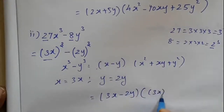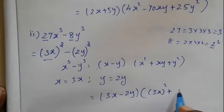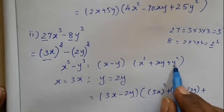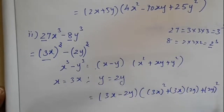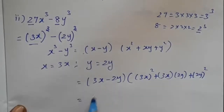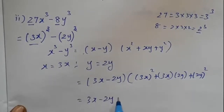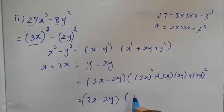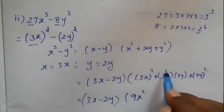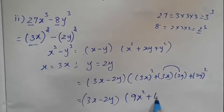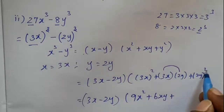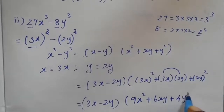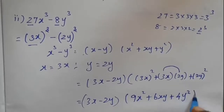x is equal to 3x, the whole squared plus x equals 3x, into 2y, plus y equals 2y. So we get 3x minus 2y. The square is 3x squared. 3x gives 6xy, plus y squared equals 2y, y equals 2y. What do we need to do with y squared? 4y squared. We need to apply this formula.